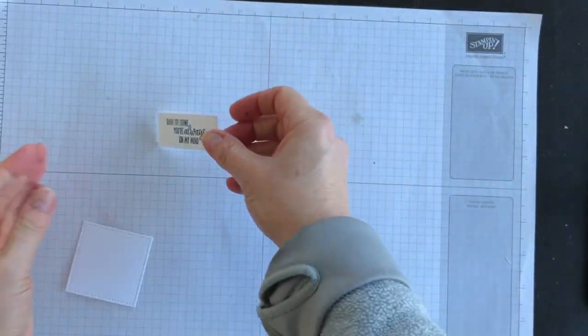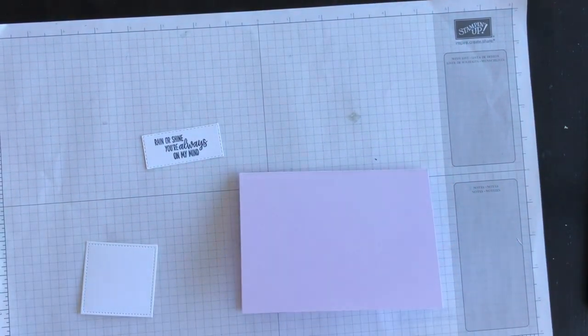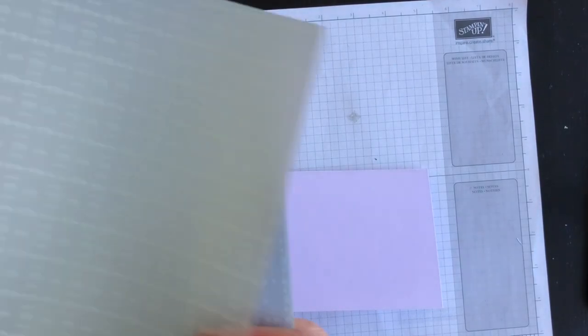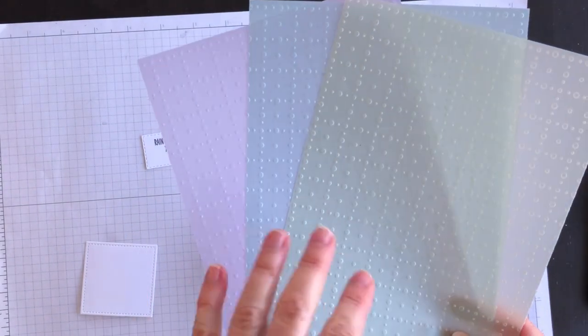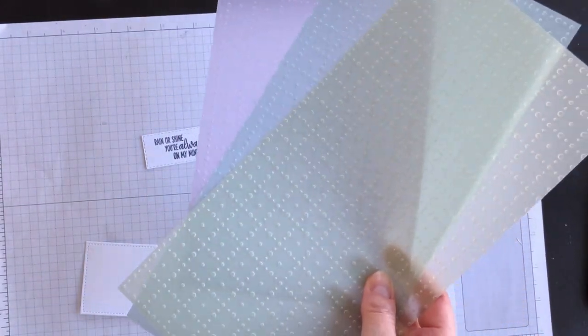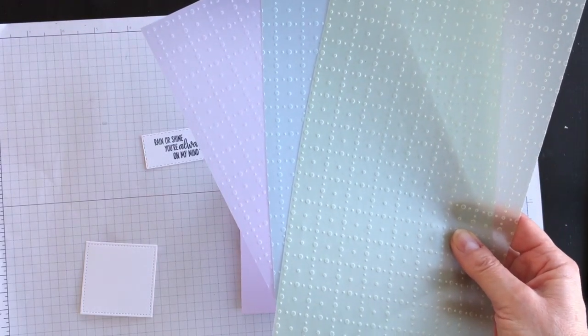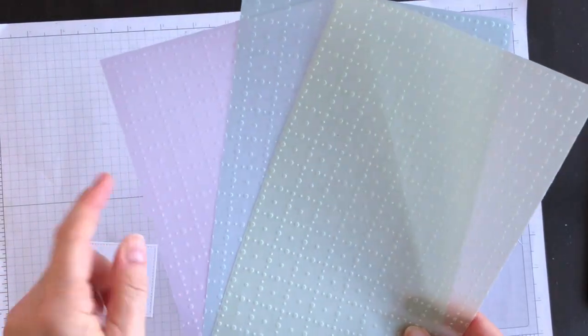All right, those layers are ready to go, and let's put it all together. Now, I did promise to you that I would show you the Vellum Specialty Designer Series paper that's available as a free choice. So you have three colors. You have the Purple Posy, you have Pool Party, and you have Soft Seafoam. Really lovely colors for spring, aren't they?